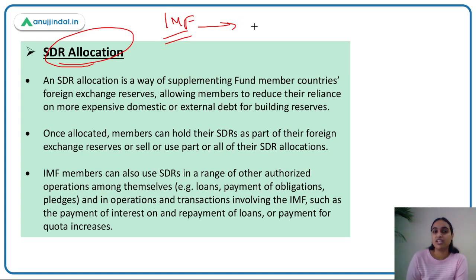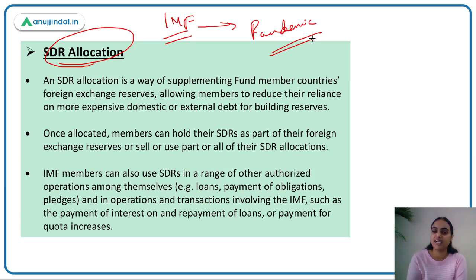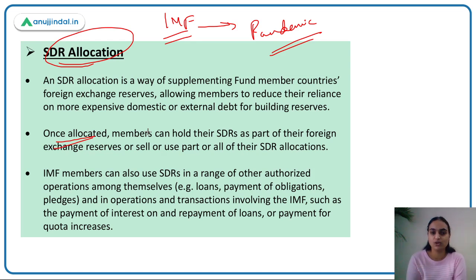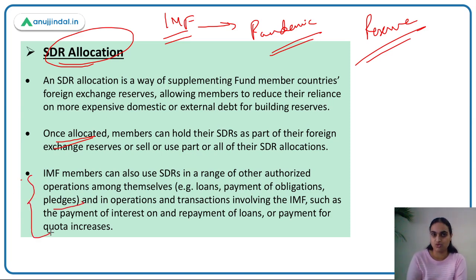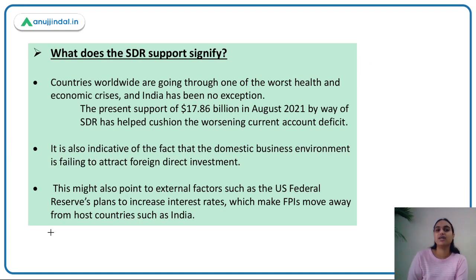SDR allocation means when IMF gives you SDRs at times of need — such as during the pandemic situation — it is a kind of help from IMF so you don't have to depend on external debt. Once SDRs have been allocated, you as a member nation can either keep those SDRs in your forex reserves or you can sell those SDRs and utilize the money. SDRs are a reserve asset you can hold or, if your current account deficit is too high and you need funds, you can sell those SDRs and also use them for paying obligations or pledging.